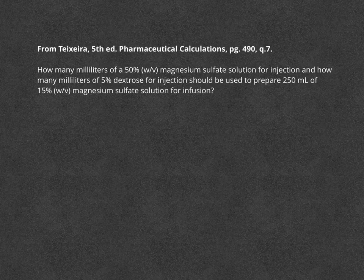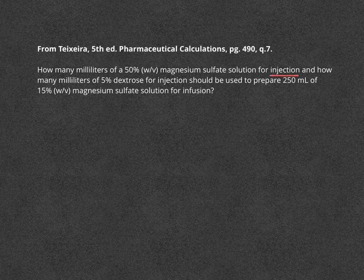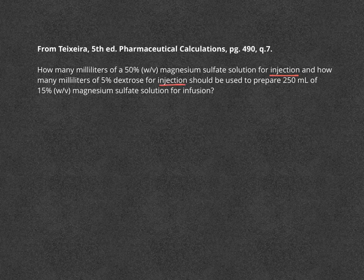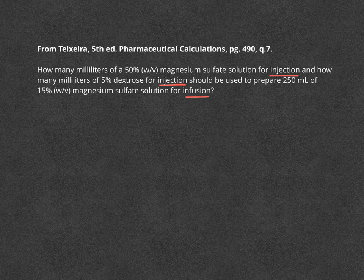Here's a practice problem. How many milliliters of a 50% weight per volume magnesium sulfate solution for injection, and how many milliliters of 5% dextrose for injection should be used to prepare 250 ml of 15% weight per volume magnesium sulfate solution for infusion? You notice here that we're taking two different products that would be normally manufactured for injection, and we want to make an infusion product.